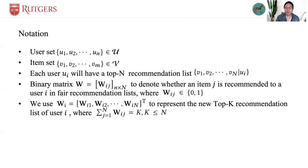We use W_i to represent the new top-k recommendation list of user i, where the summation of W_ij from 1 to N is k. Next, we define the user-oriented group fairness in recommender systems following these notations.